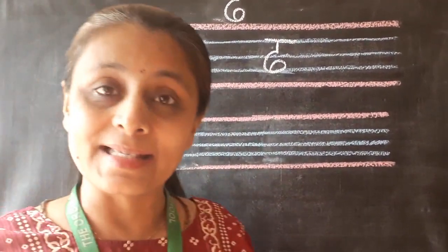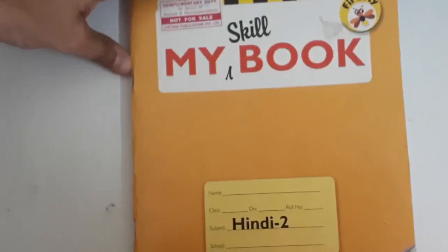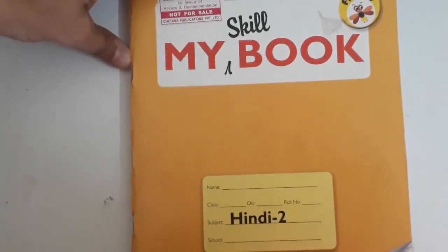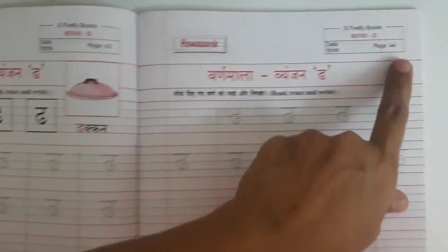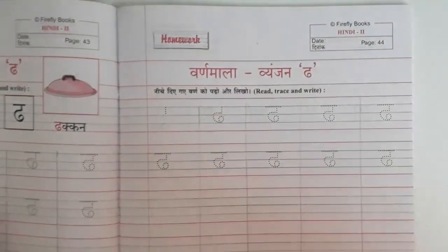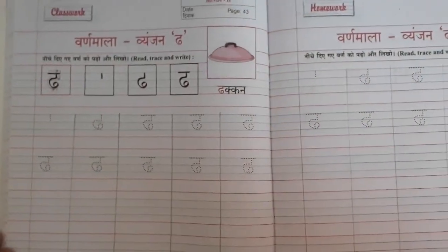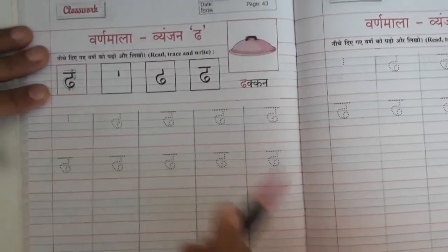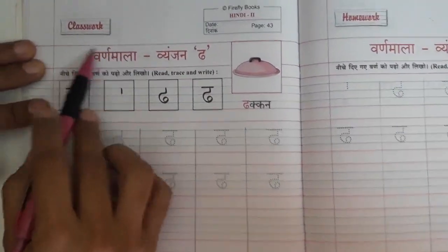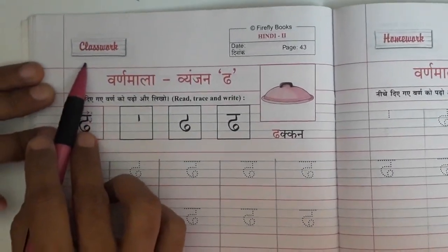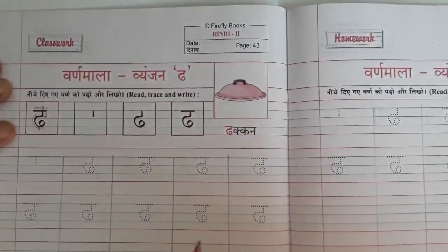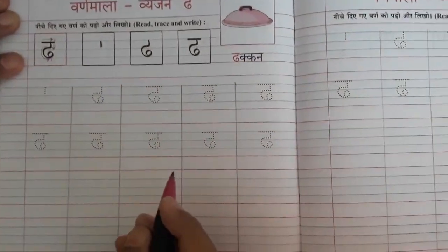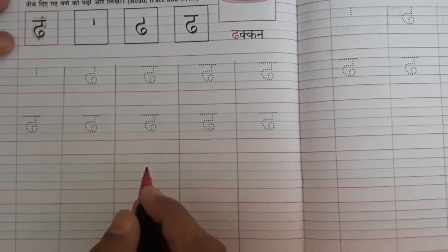Now let's see in our notebook. Let's open Hindi My Skill Book and open page number 43 and page number 44. You can see letter Dha on this page. First of all, you are going to write today's date on both pages. Now let's see how to write letter Dha in the notebook.